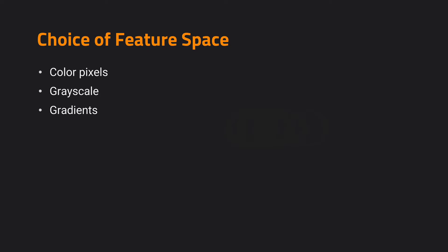The choice of the feature space can be multiple. For example, you can either choose to use the original color pixels to represent the region, or use a grayscale image. Those images will suffer from contrast change, in which case the gradient of the image will be more robust.